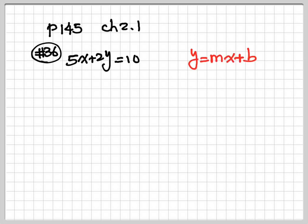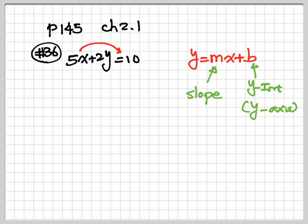b is the y-intercept, which is located on the y-axis. m is the slope of the line. So let's go back to our question. We want to put everything into the slope-intercept form, so we just want y by itself. Therefore, we go move the x to the other side of the equation.